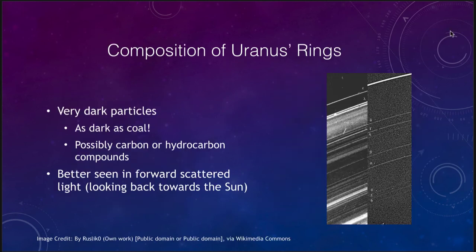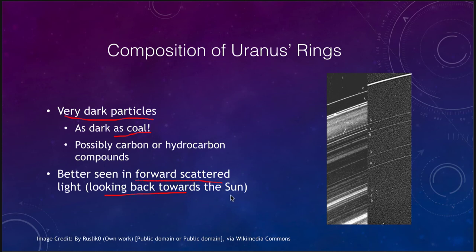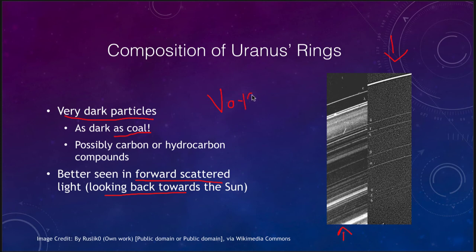What is the composition of these rings? They are very dark particles — not icy like the rings of Saturn. In fact, they are as dark as coal. We don't really see them in forward-looking light, but we do see them in forward scattered light, meaning we're looking back towards the sun. If we were behind them looking back, we would see all sorts of light scattering through these rings, with a lot more structures not visible from Earth. The only spacecraft that really went close was Voyager 2, which went past Uranus and turned back to look toward the sun. Looking from behind, other than the different composition, we see very similar structures to what we saw on Saturn.